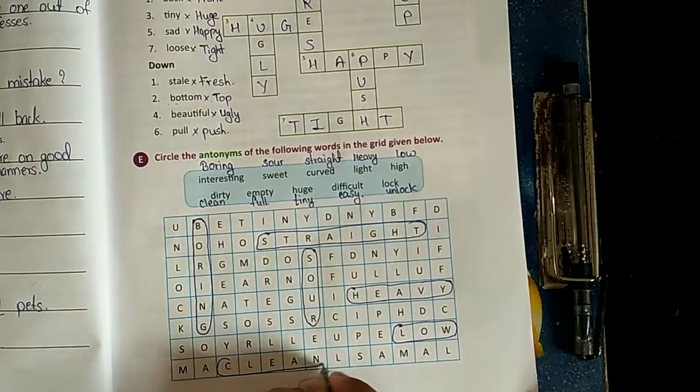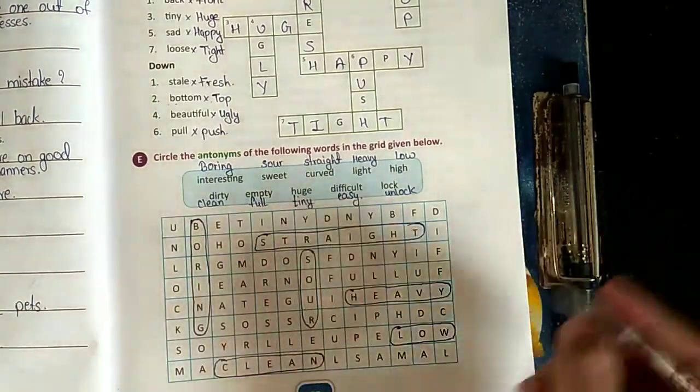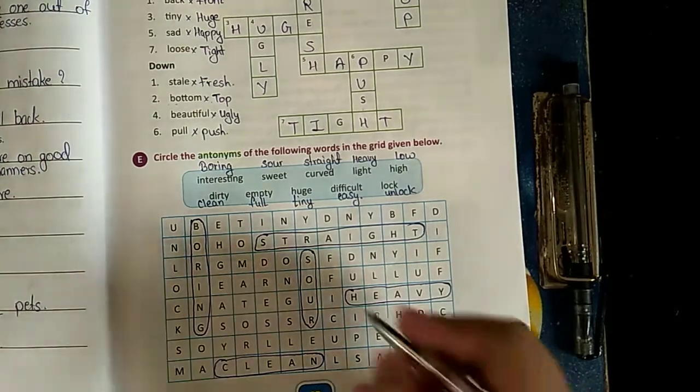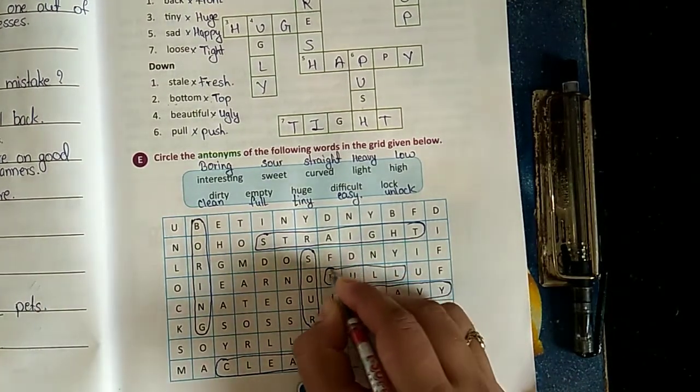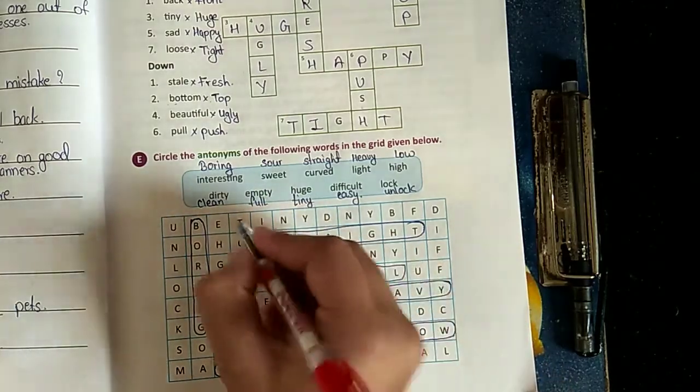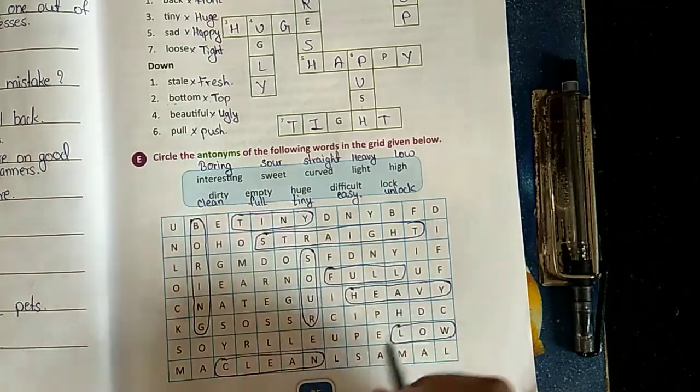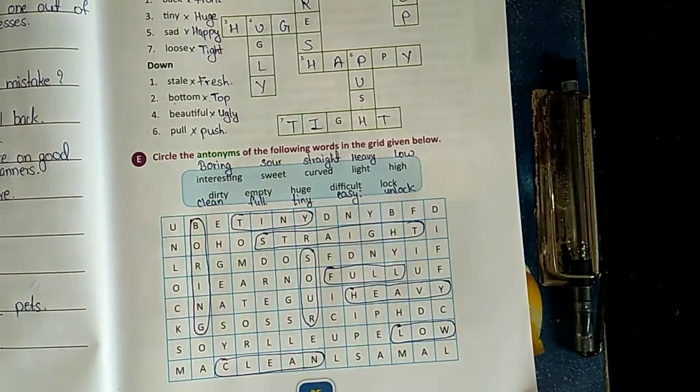Empty - full. Where is full? Full is here: F-U-double L, full. Opposite of huge - tiny: T-I-N-Y. Opposite of difficult - easy. Where is easy? Can anyone see? Yep, it is here: E-A-S-Y.